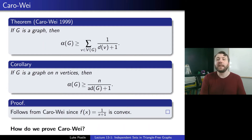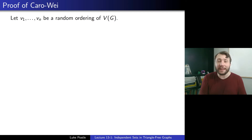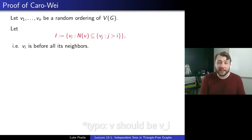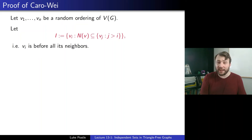We let v1 up to vn be a random ordering of V(G) — a random permutation chosen uniformly over all permutations of vertices. Here's the crucial definition: we let I be the set of vertices vi such that N(vi) is a subset of {vj : j > i}, i.e., vi comes before all of its neighbors in the ordering.